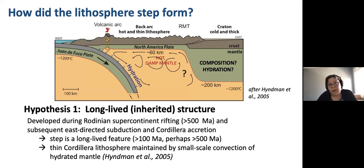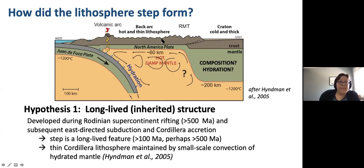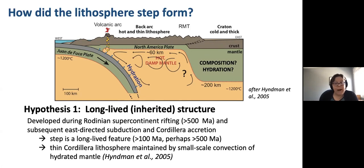There are two end-member hypotheses. The first is that this is a very long-lived structure inherited from previous events that marked the growth of the Cordillera as it was accreted to the western side of the craton. One idea is that we had rifting of the craton - supercontinent rifting - followed by the accretion of the Cordillera through east-directed subduction. In this hypothesis, this step would have been formed through rifting followed by subduction and accretion. Based on timing, this would suggest the step is a long-lived feature formed more than 100 million years ago, and perhaps much longer than that.